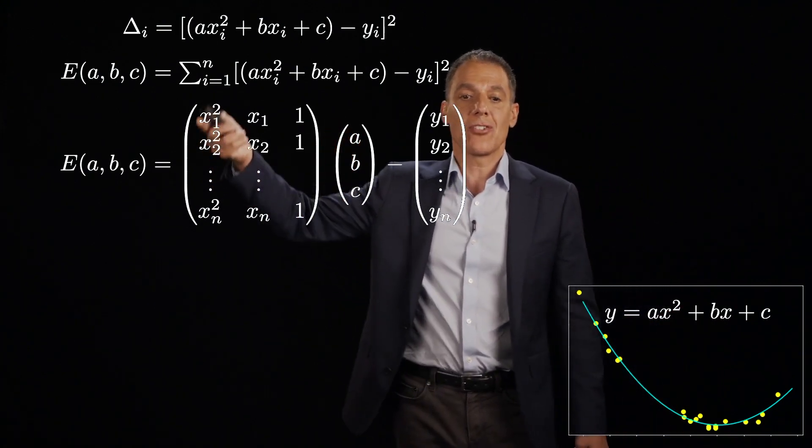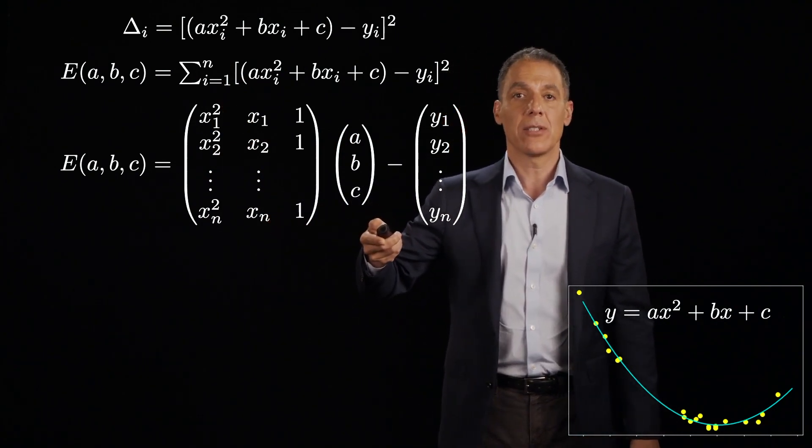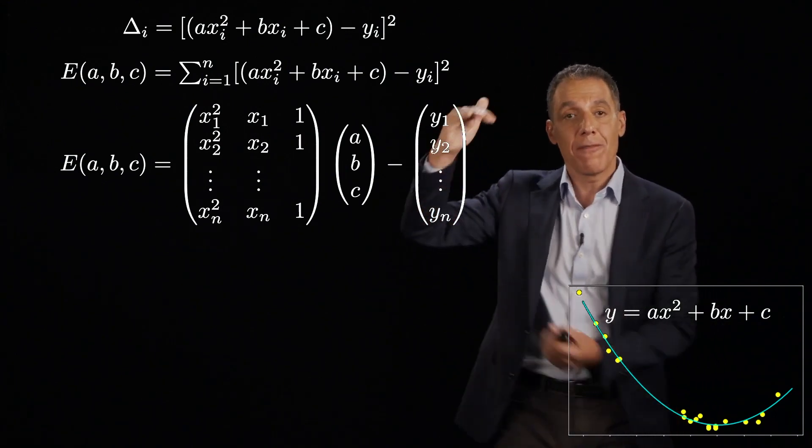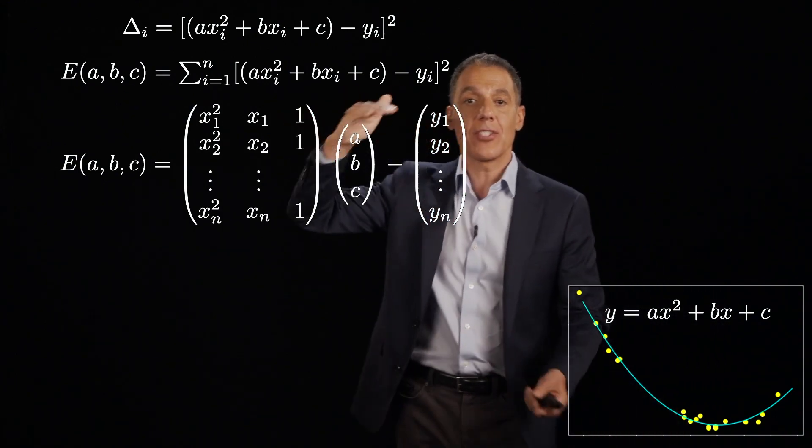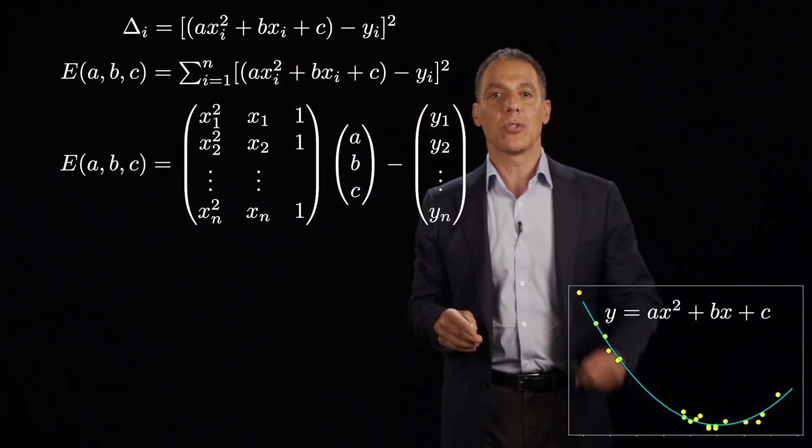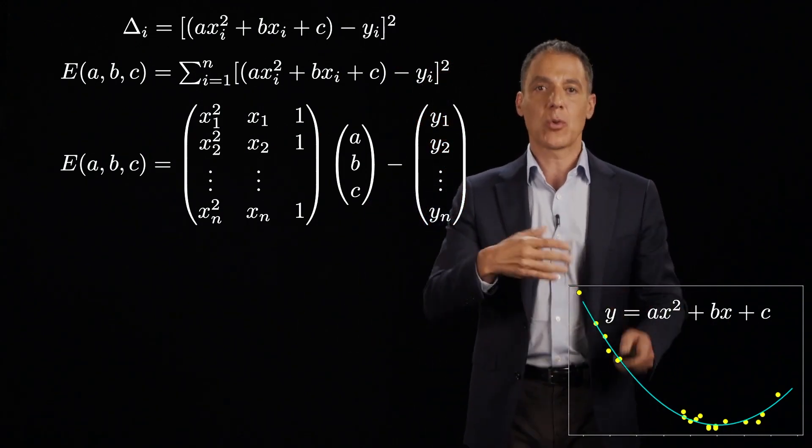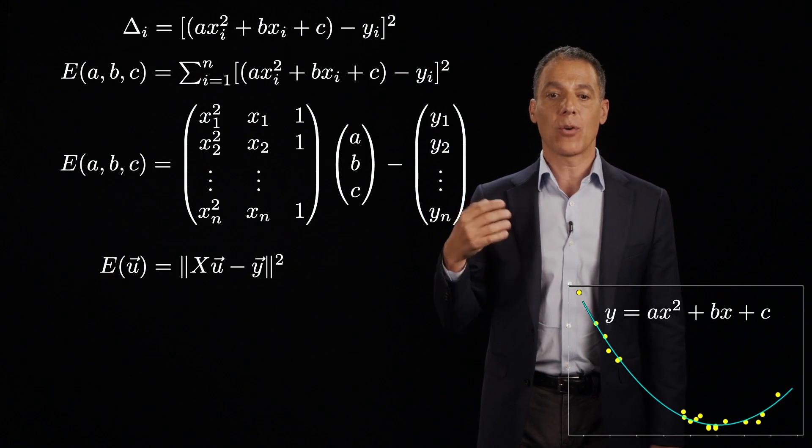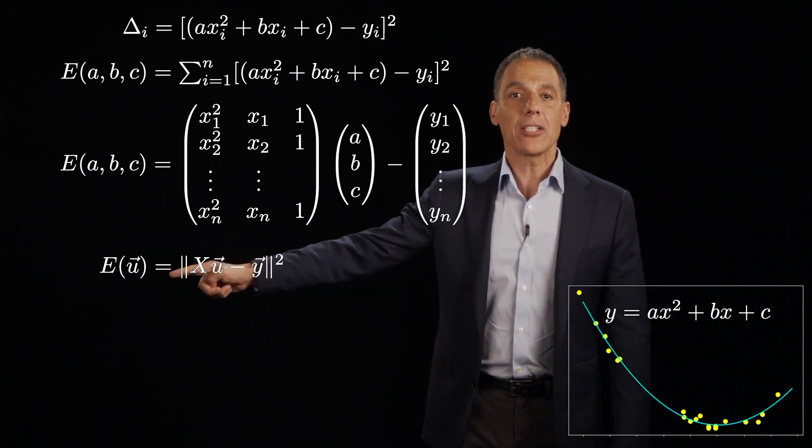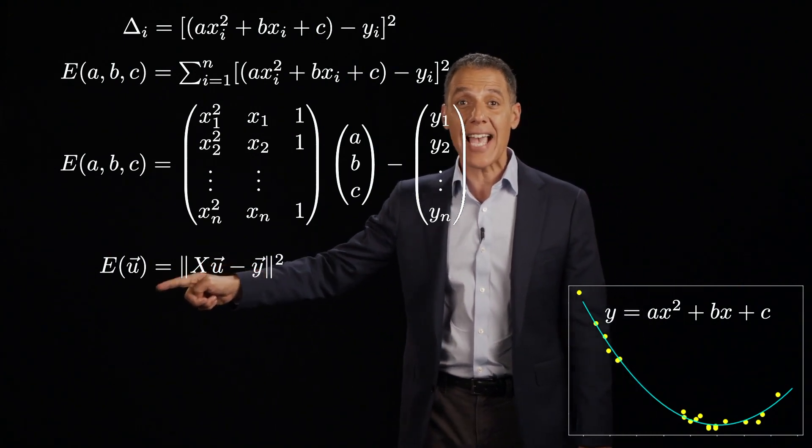The next row is going to be the next data point. X2 squared, X2, 1 multiplies this. And of course, I'm going to subtract that from Y1, Y2, all the way to YN. This should look familiar. What did I have before? I had exactly this just throw away that first column because my model was BX plus C, MX plus B, for example, in the previous one, minus Y. So all I've had to do is add an extra column here, an extra element here, and this looks pretty similar.